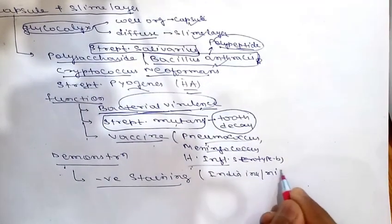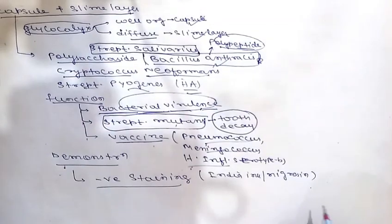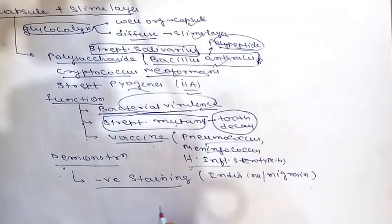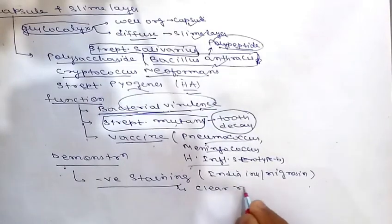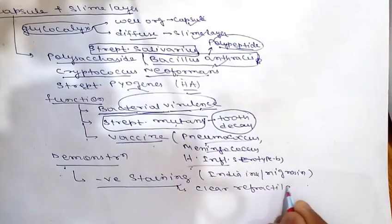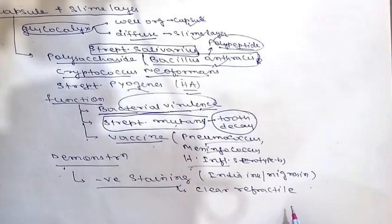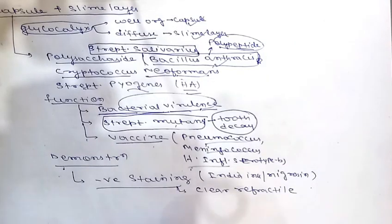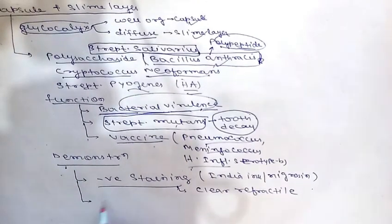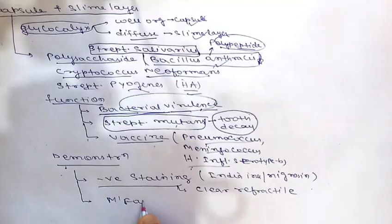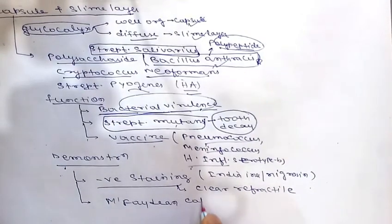Negative staining uses India ink or Nigrosine stain. After negative staining, the capsule appears as a clear refractile halo around the bacteria. Both the bacteria and the background appear black, and the capsule is seen as the clear zone between them.